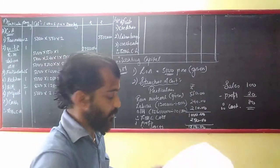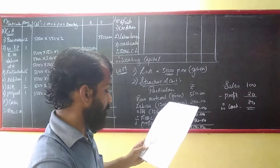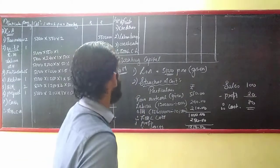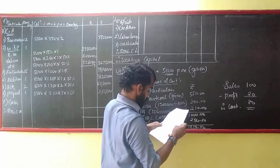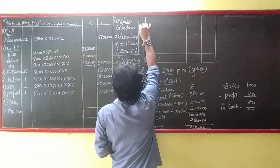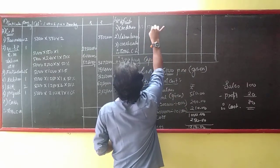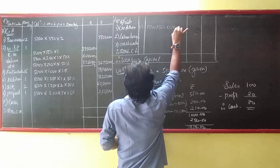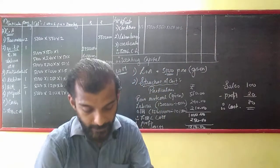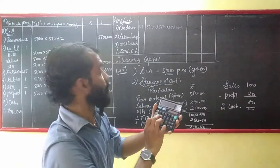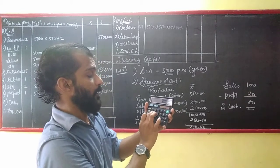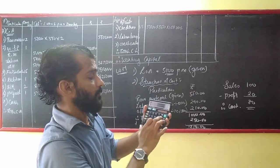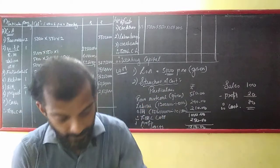Now for creditors: payment of wages is 1 month. 20% is cash purchase — no creditor. For material creditors: 5,000 × ₹550 × 1.5 × 80% — so that comes to ₹33,00,000.